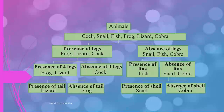Now we discuss the dichotomous key for animals. All six animals can be divided into two parts based on presence or absence of legs.